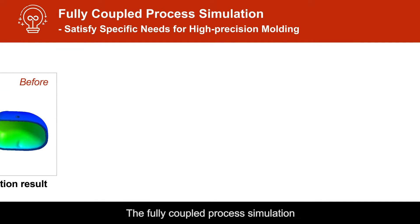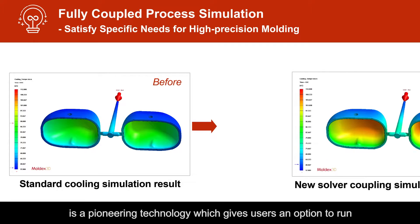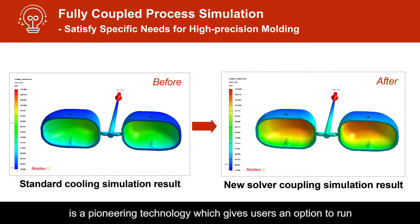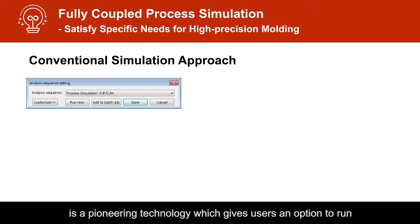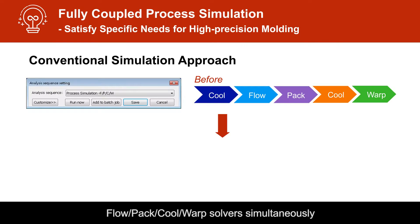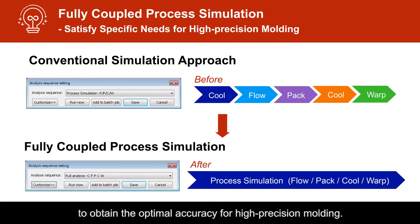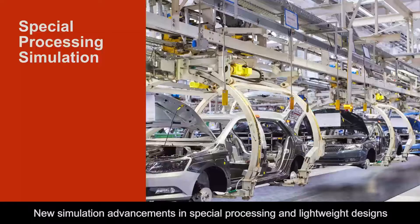The fully coupled process simulation is a pioneering technology which gives users an option to run flow, pack, cool, and warp solvers simultaneously to obtain the optimal accuracy for high-precision molding.